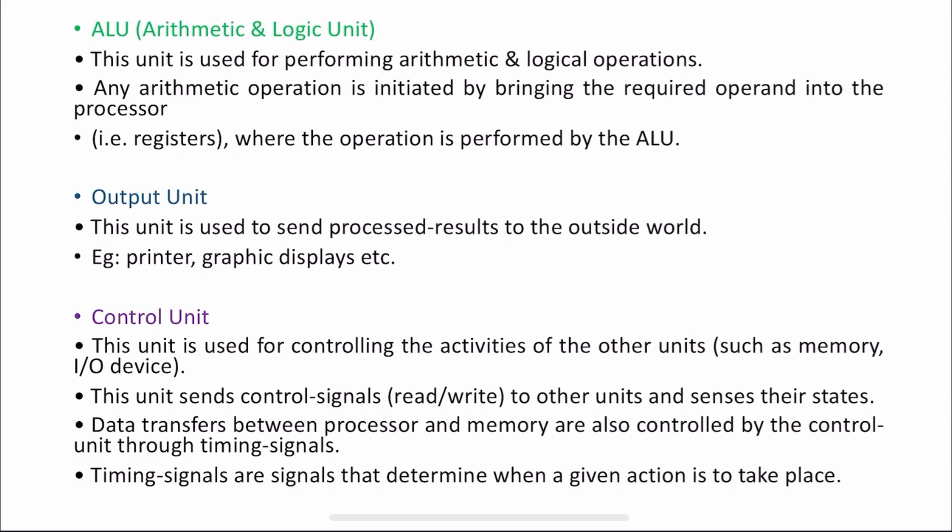Timing signals are signals that determine when a given action is to take place. When that timing signal fires, you do your task according to instructions. For example, after two seconds, I have to transfer my data — the timing signal will be sent and after two seconds you can transfer your data. So the control unit takes care of all of this.